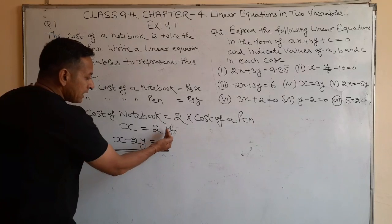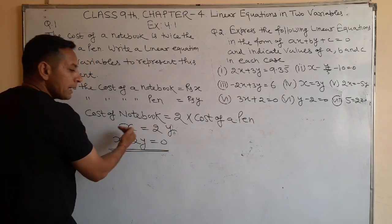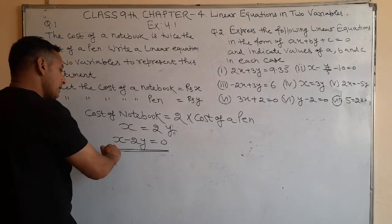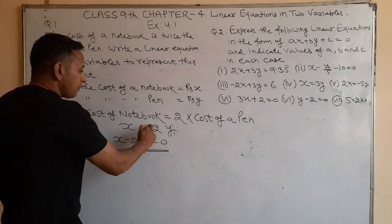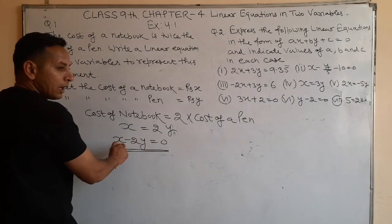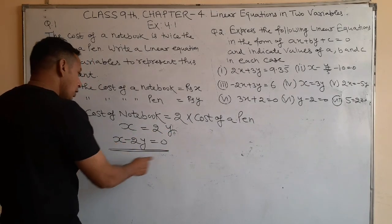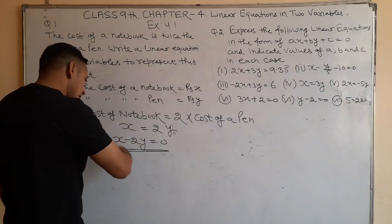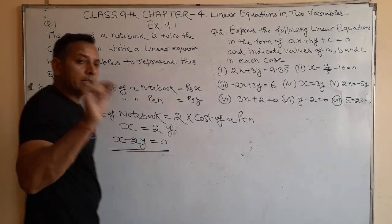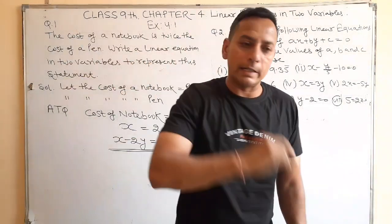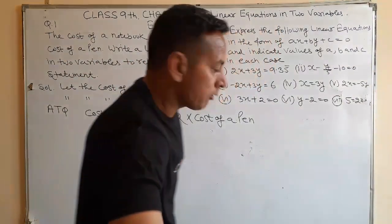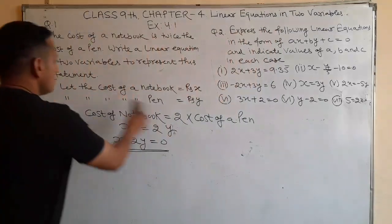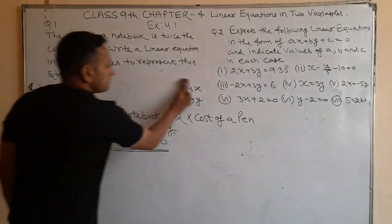We transpose the term to the left hand side, giving us a linear equation in two variables. This is the representation of the linear equation in 2 variables.